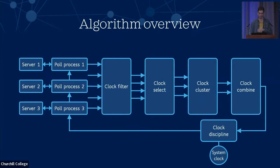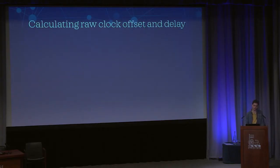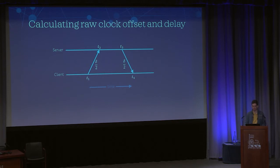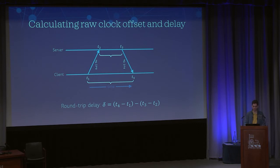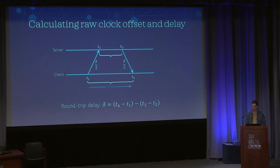So how do we calculate these delay and offset values given a request message to the server and a response message back? We record four timestamps on sending and receiving, and the delay we're calculating is just the entire round trip minus the time spent processing on the server — just the length of the two arrows. We can see that we're assuming the delay is symmetric, which is why it's delta over 2 on each of the arrows.